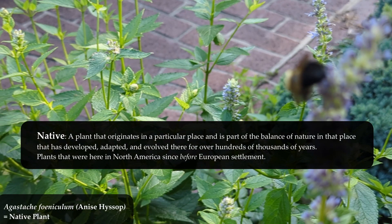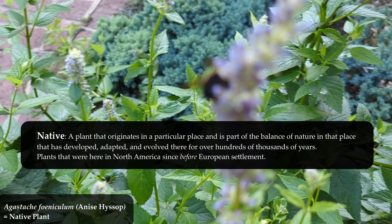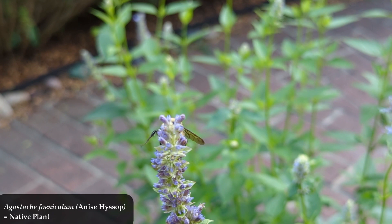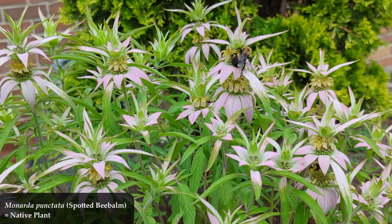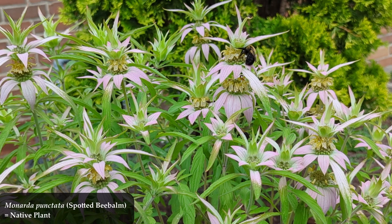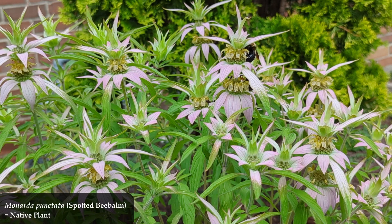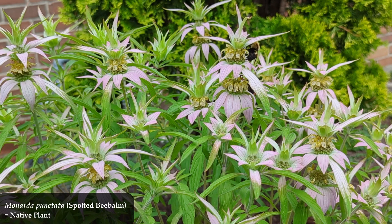Plants that are here in the United States and North America, that have been here since before European settlement, are generally considered native. Whether you consider European settlement to have started around 1492, when Columbus sailed the ocean blue, or earlier — maybe around the 900s — that detail doesn't actually matter. We're talking about plants that have been here in North America for hundreds of thousands of years. That's a native plant.